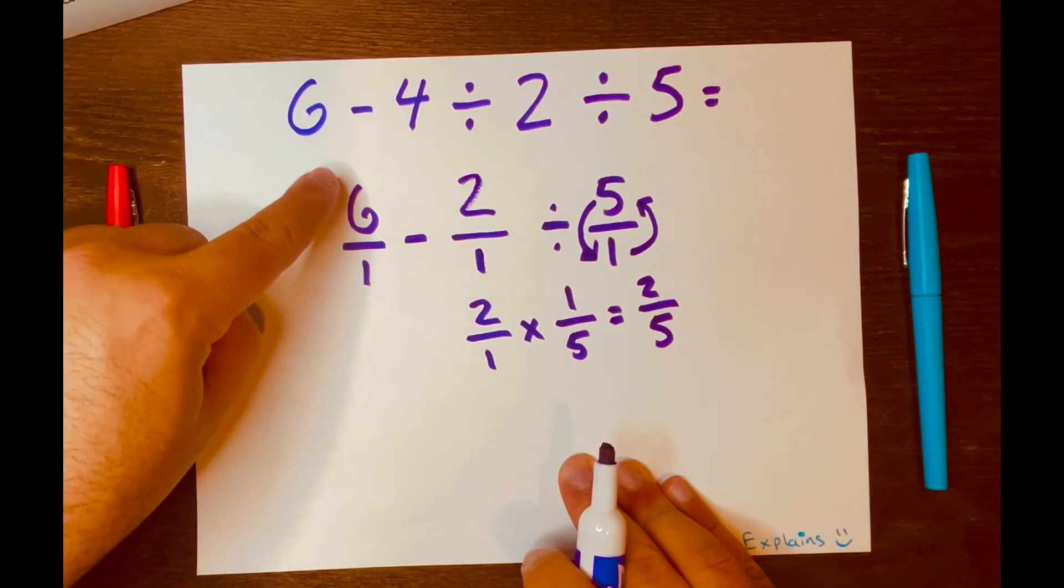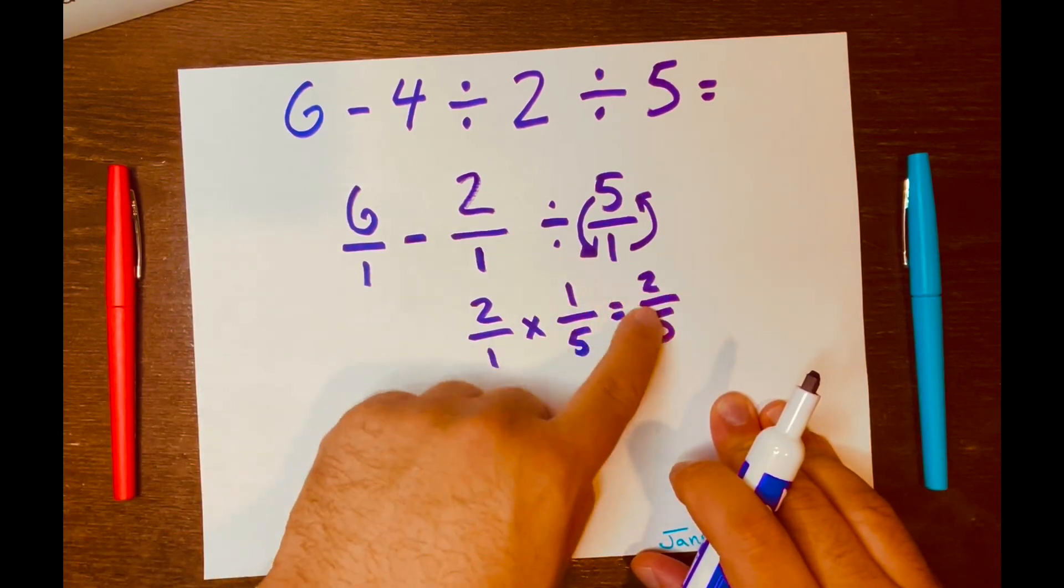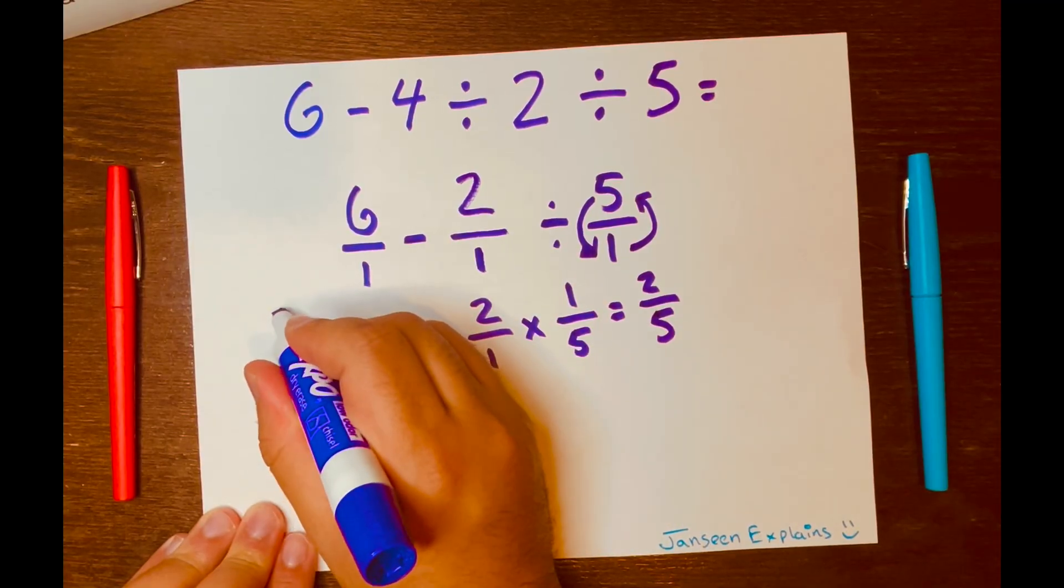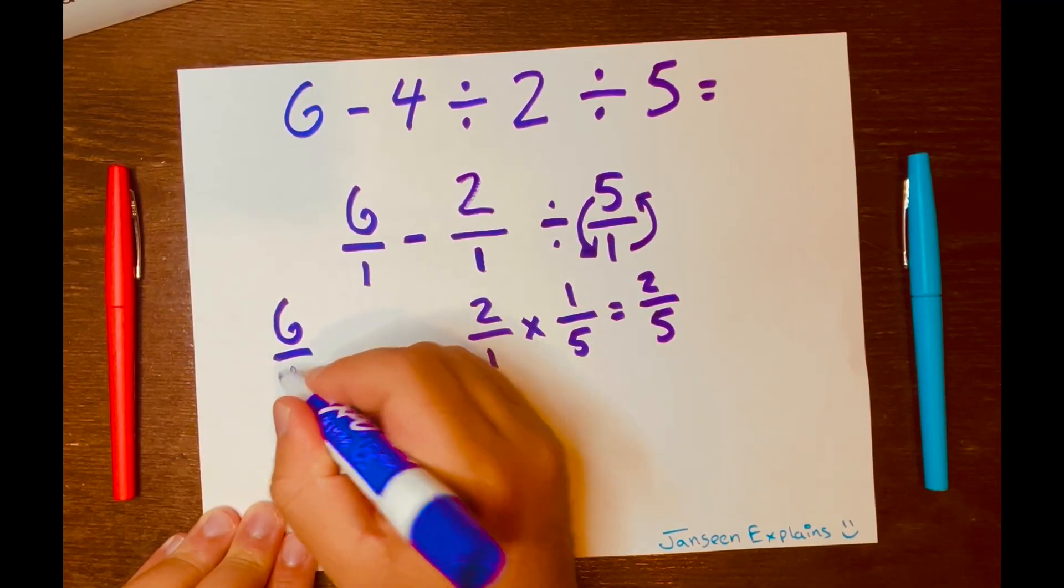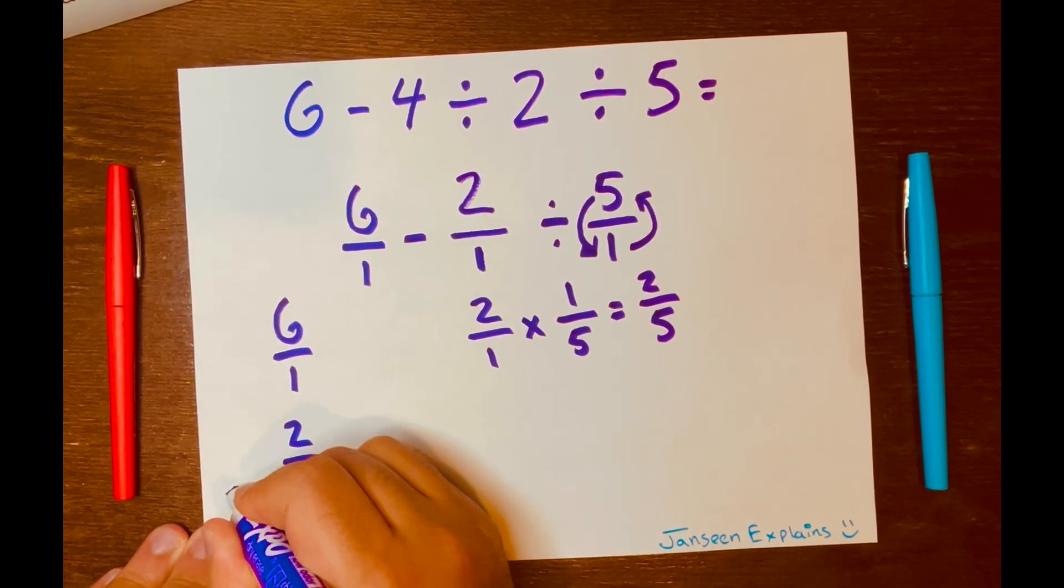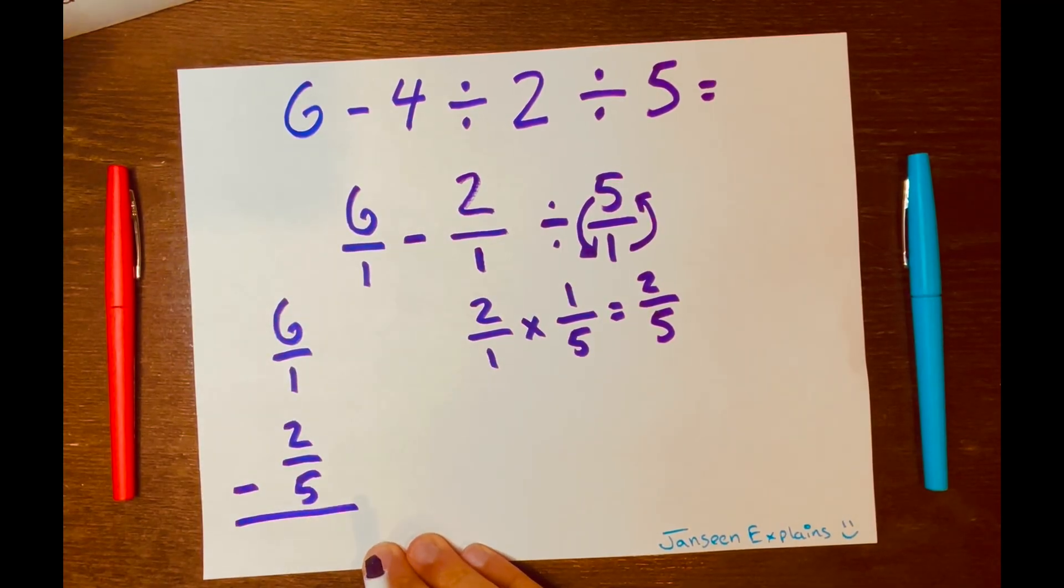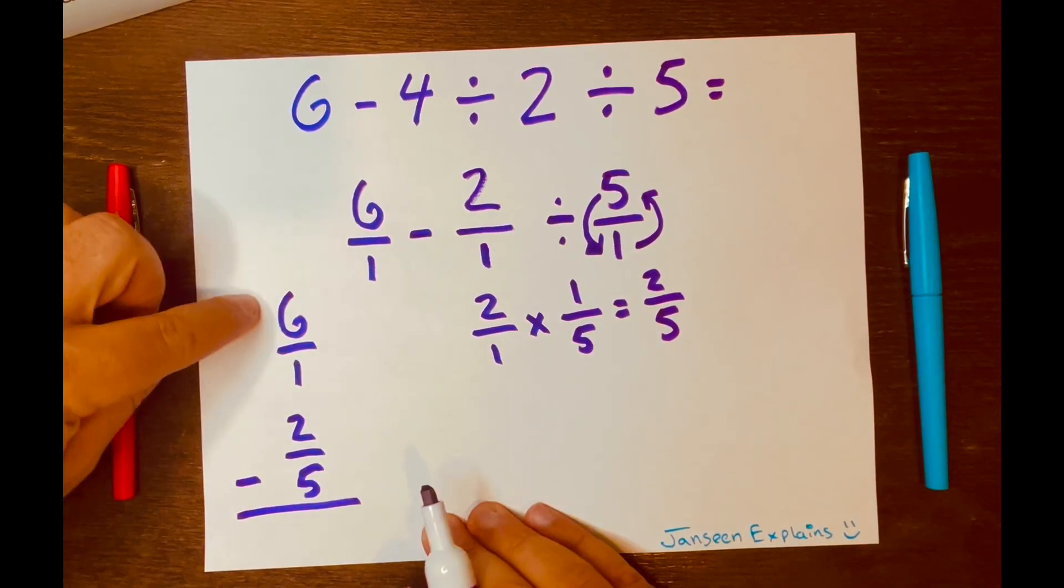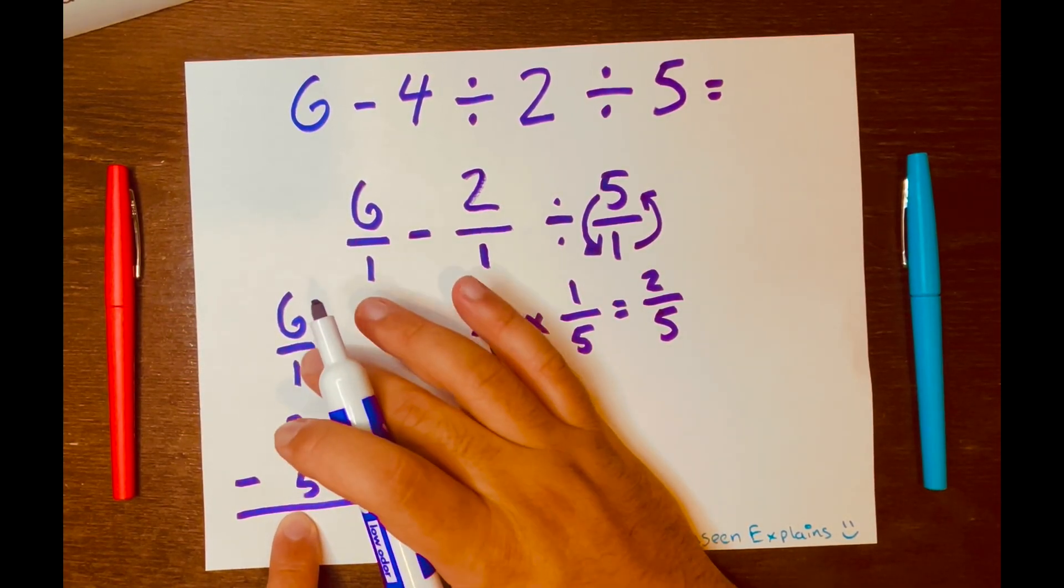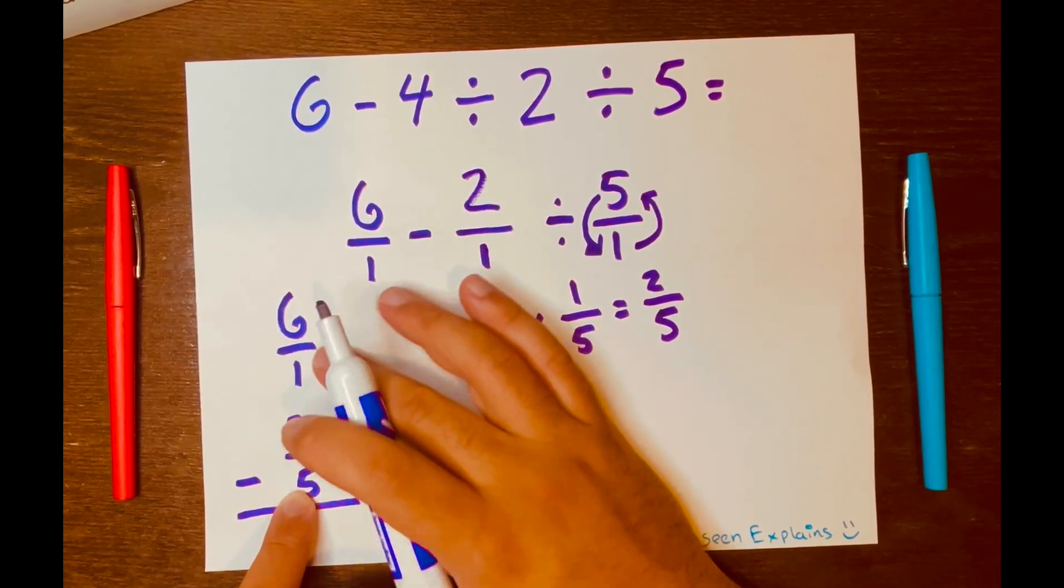And now we're going to subtract 6/1 - 2/5. And I want to write this in vertical form. So I'll write it like this: 6/1 and 2/5, minus because we are subtracting. Now we have two fractions we're subtracting, but we cannot subtract because the denominators are different. They need to be the same in order for us to subtract.